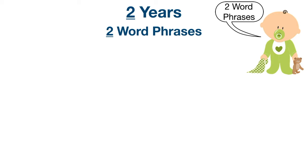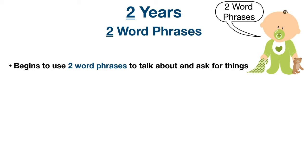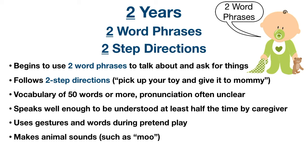Next we have two years of age. The two is used to remember 'two word phrases.' The child begins to put two words together to talk about or ask for things — like 'more milk,' 'no juice,' or 'daddy book' — and asks two-word questions like 'where's doggy' or 'bye bye.' The two also helps remember two-step directions, such as 'pick up your toy and give it to mommy.' They may have a vocabulary of 50 words or more, though pronunciation is often unclear, and parents can usually understand at least half of their speech.